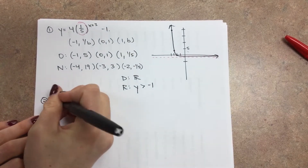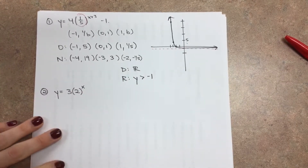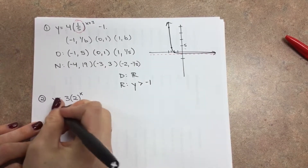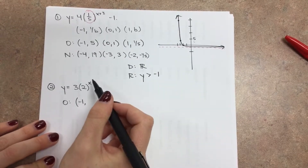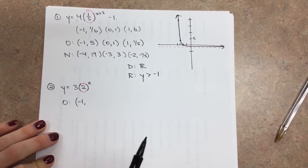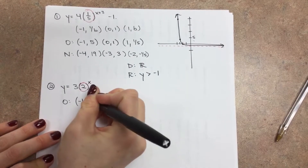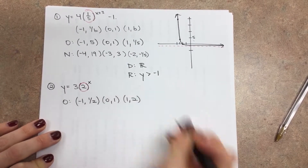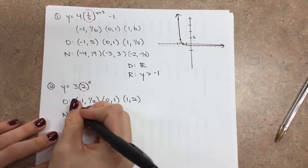Number 2 is similar: y equals 3 times 2 to the x. This one is a bit more basic with fewer extra numbers. We start with three original points. The reciprocal of the base 2 is 1/2, giving point negative 1, 1/2. Middle point is 0, 1. Third point is 1, 2. Remember: you find the exponent and whatever it's directly attached to is your base — not always in parentheses. The exponent is just x, so x values don't change.